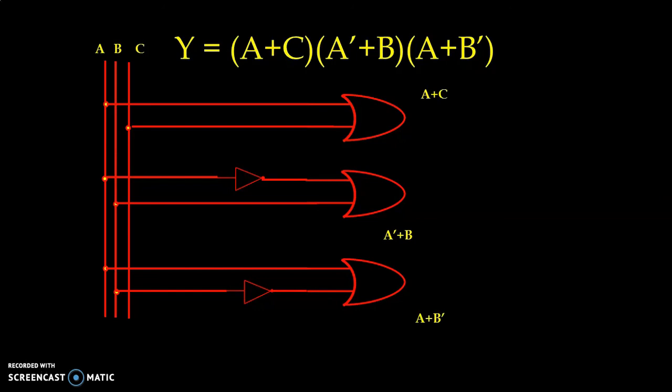Now to prepare a product term of all the sum terms, we use AND gate with the three inputs. We connect output of all the OR gates to the input of the AND gate. And we take output of the AND gate. And that is our final output: Y is equal to A plus C dot A bar plus B dot A plus B bar.